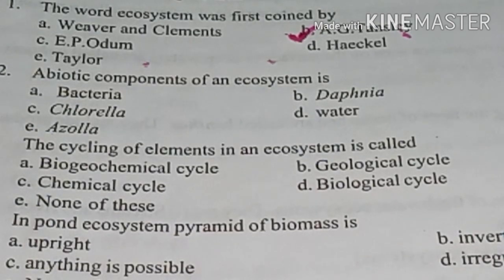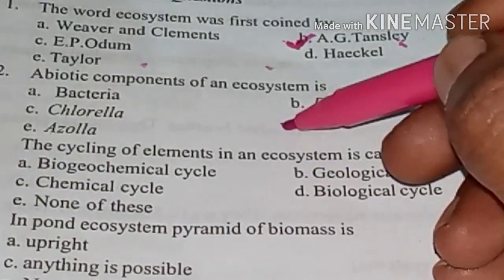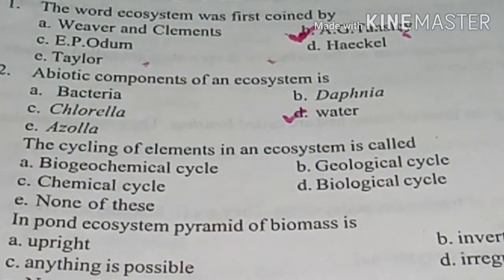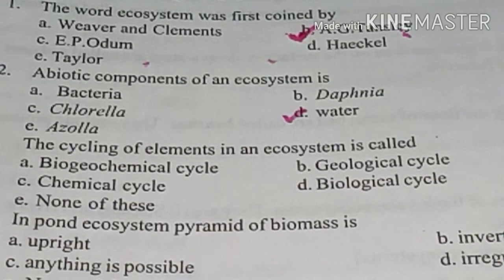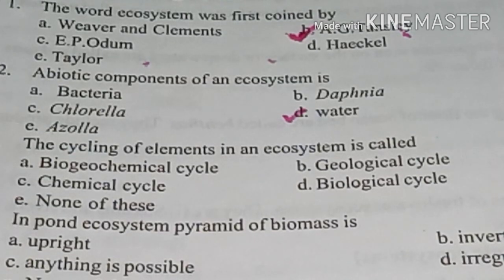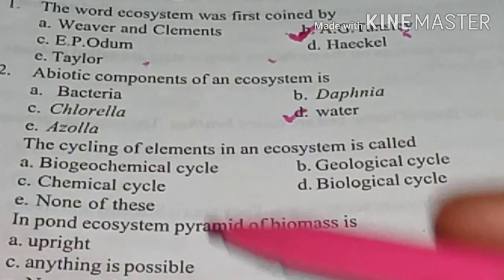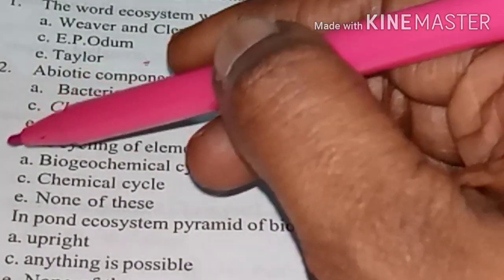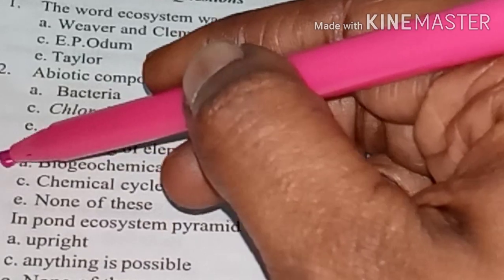Abiotic components of an ecosystem is answer option D: Water. The cycling of elements in an ecosystem is called answer option A: Biogeochemical cycle.